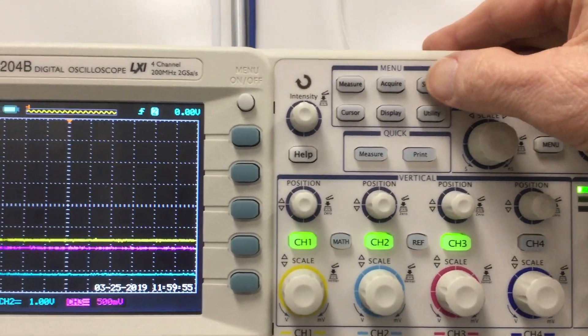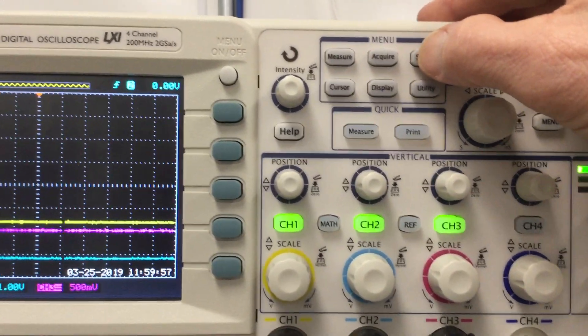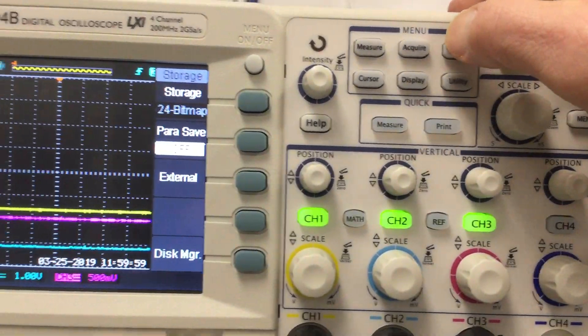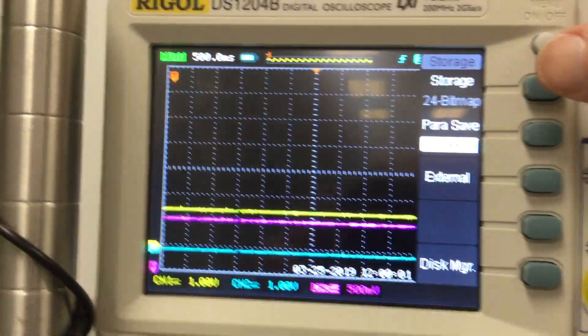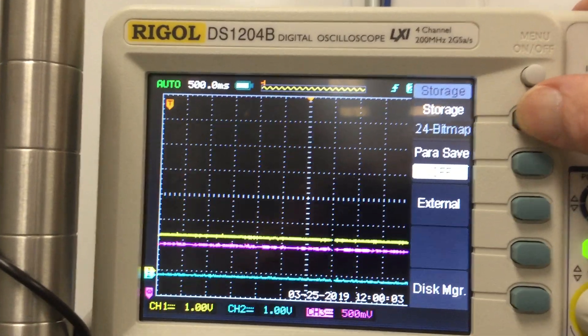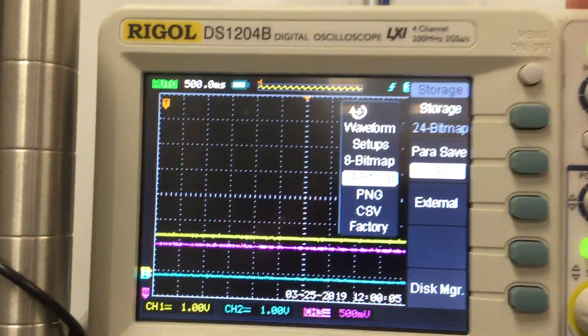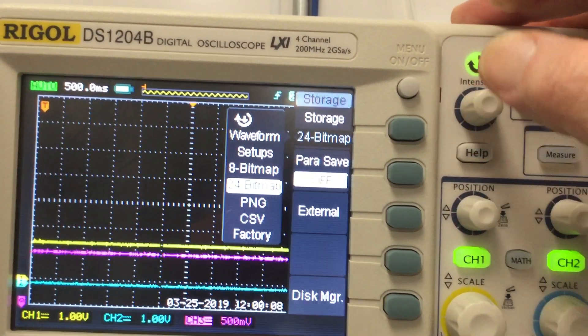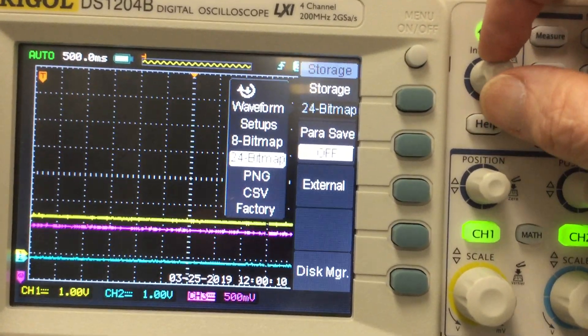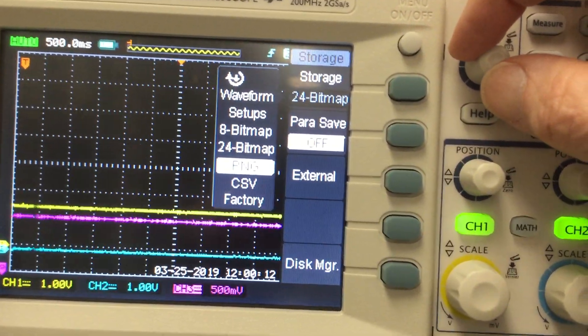Okay, to set up the storage so it works correctly, you hit storage and then you want to hit this storage button and adjust this to the 24-bit map. You could also do PNG, I guess that would work. We'll try that, so I'll hit storage.